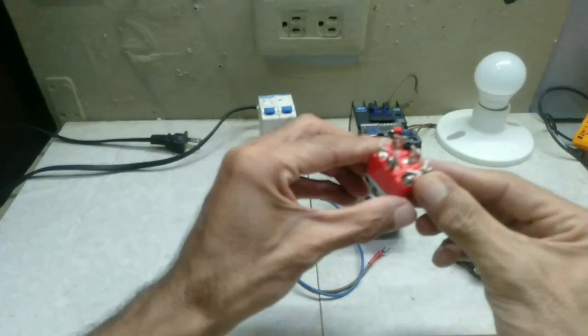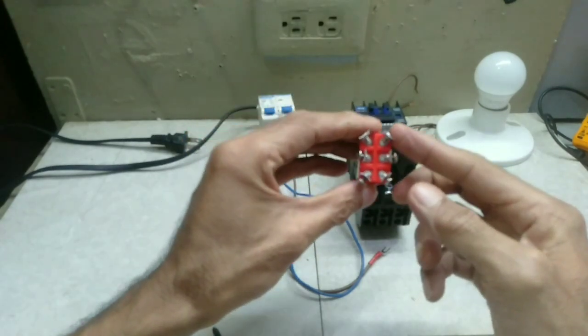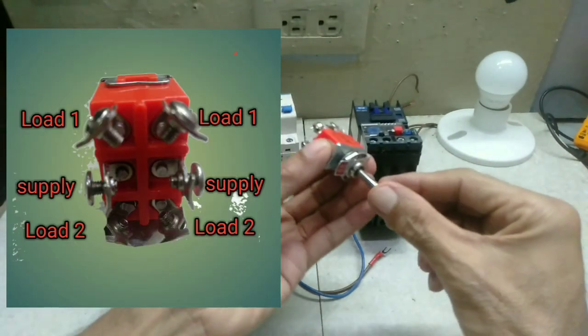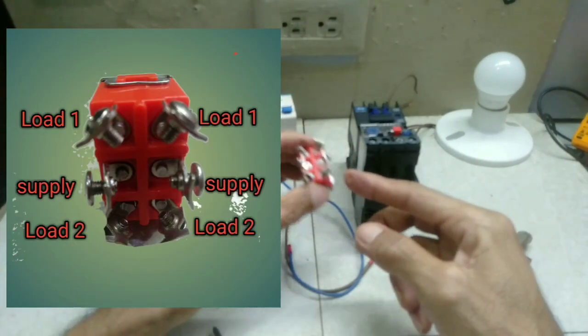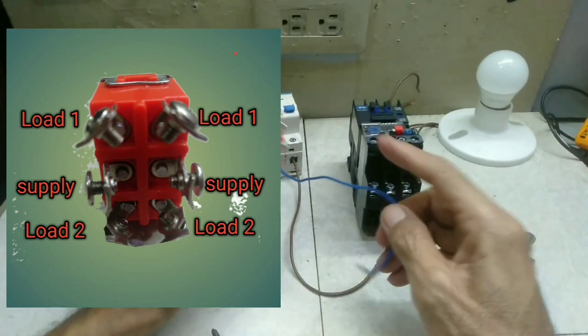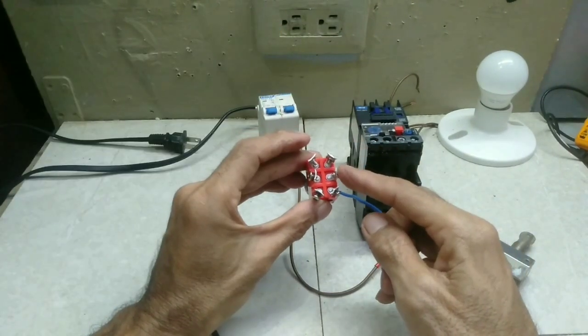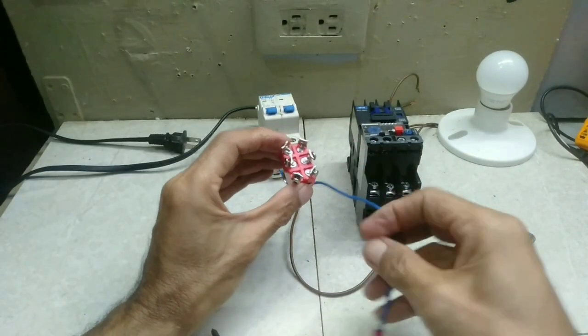In this setup I will use the 6-terminal toggle switch for on-off. This switch has 2-way for the load. At the middle, 2 terminals will be supplied.